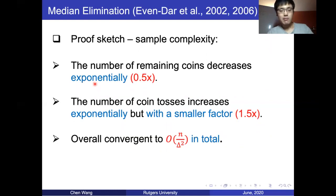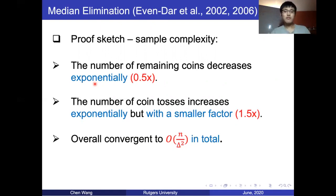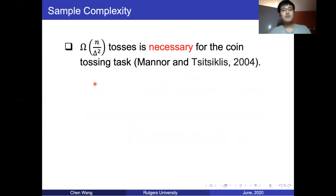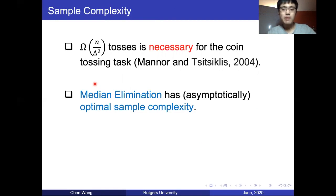For the sample complexity: although we increase the number of coin tosses for some coins, we decrease the number of coins by a more aggressive factor. So overall the number of coin tosses decreases as the round goes up, and summing over all rounds it converges to asymptotically O(n / δ²). There is also a matching lower bound proved by Mannor and Tsitsiklis, which states that for any algorithm to find the most biased coin with constant high probability, this number of coin tosses is necessary. So median elimination basically solves the asymptotic sample complexity of the coin tossing problem.